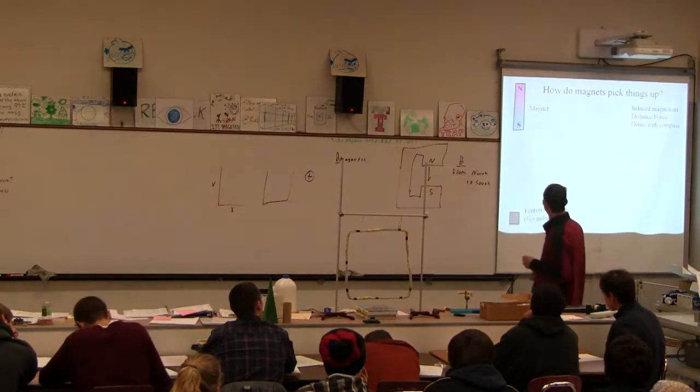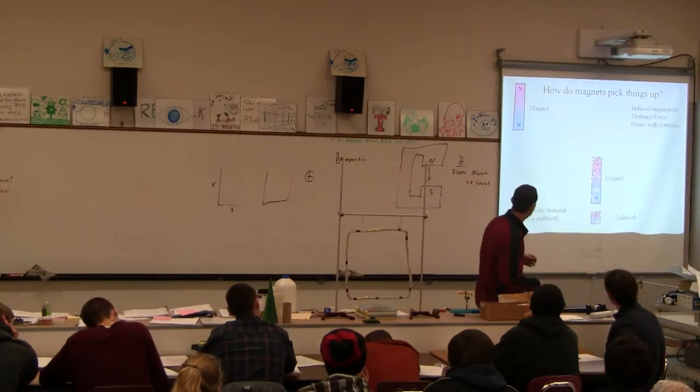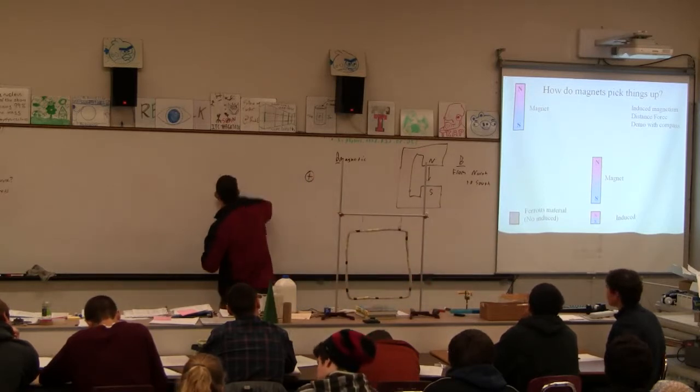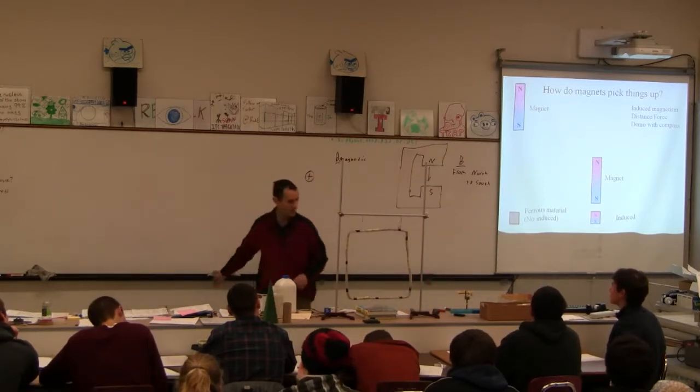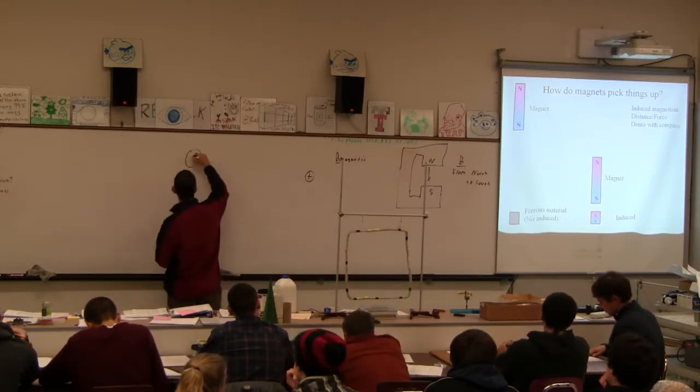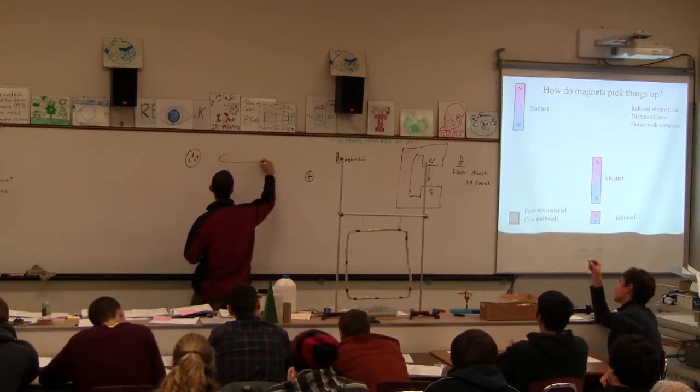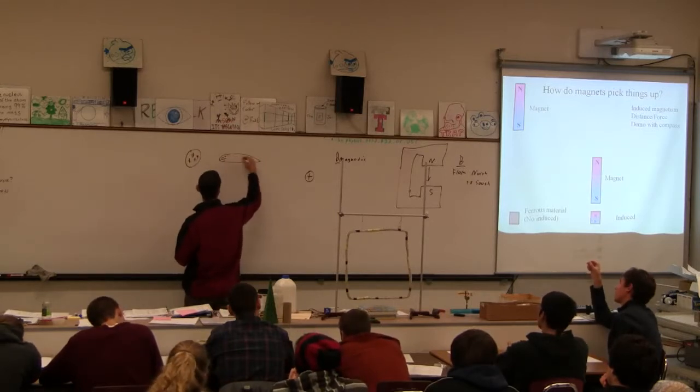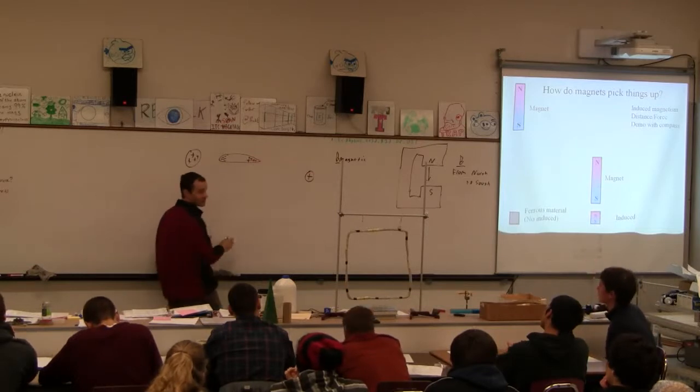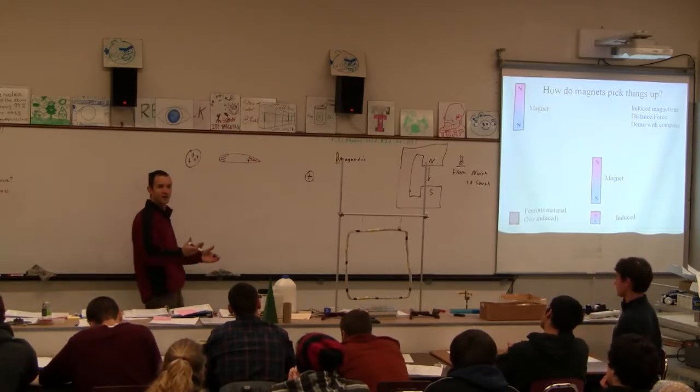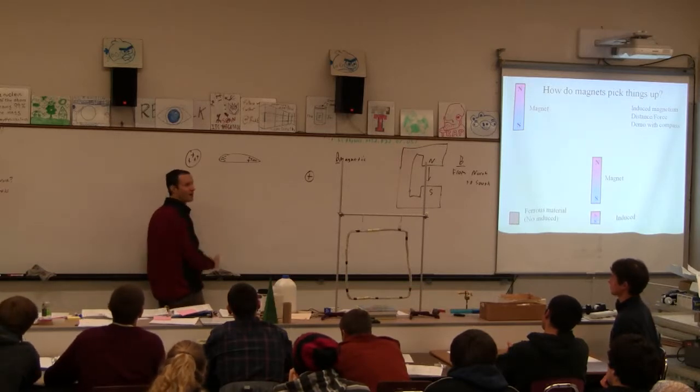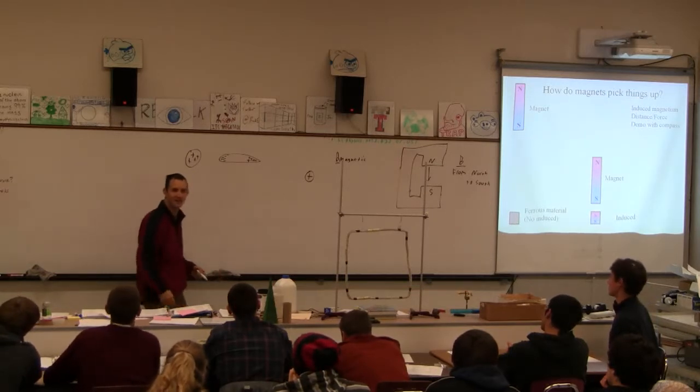Now, in the same way that we had induced charge, and we talked about this with induced charge. If we have an object, if I've got a charged object, say this is positively charged, if this is a piece of metal, this side will be negatively charged, and this side will be positively charged. And then we talked about this. This is how static charge picks up little bits of paper or something like that, or lint or whatever, or why that sock sticks to your leg that comes out of the dryer.